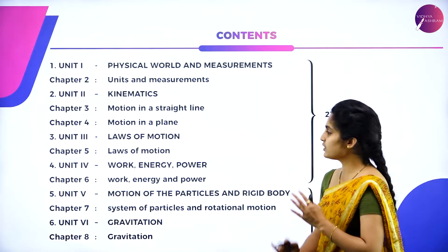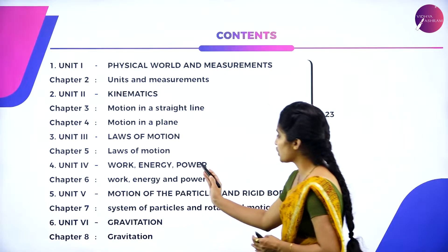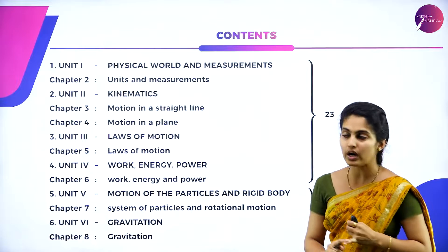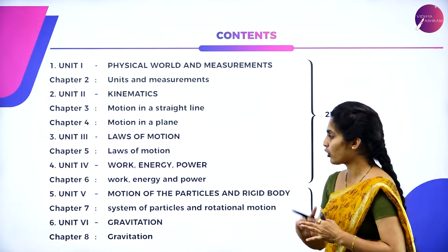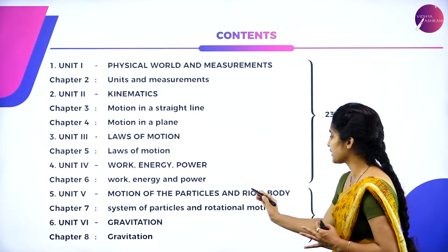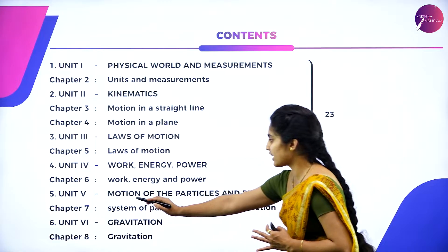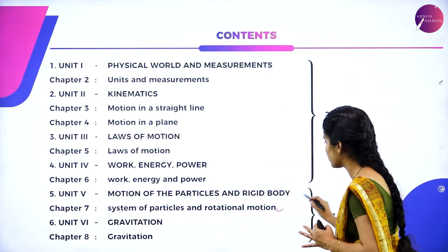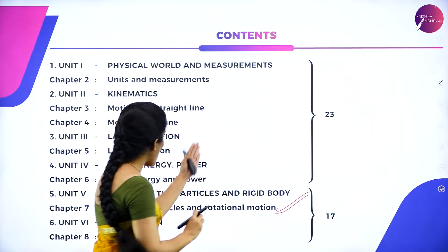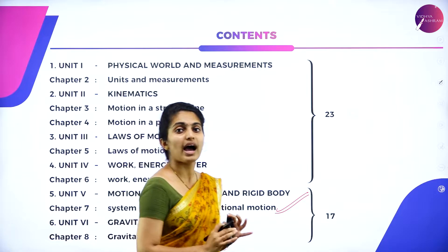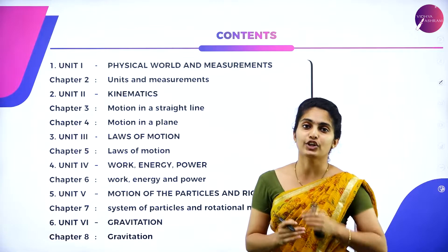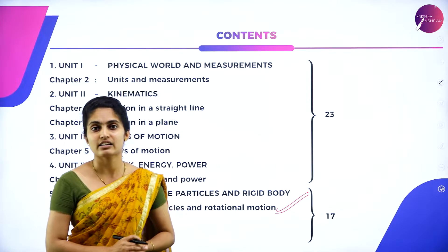The fourth unit consists of work, energy and power, dealt with in Chapter 6. We study work, energy, and power. The fifth unit is motion of particles and rigid body — Chapter 7, system of particles and rotational motion — which is a very new topic. Other topics you have already studied in your previous classes, Class 9 and Class 10.